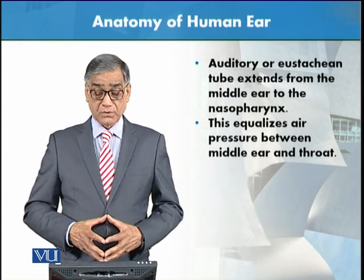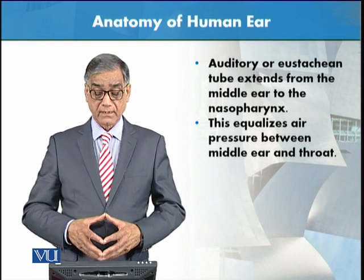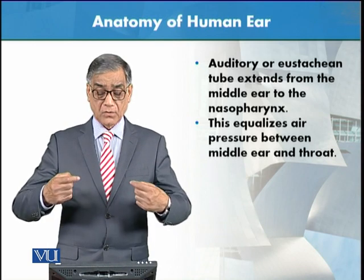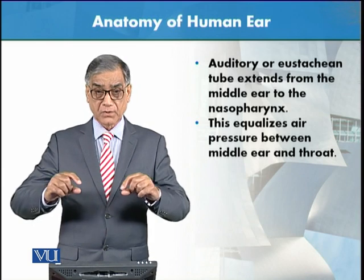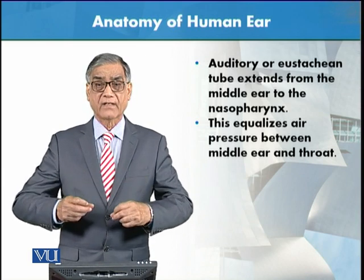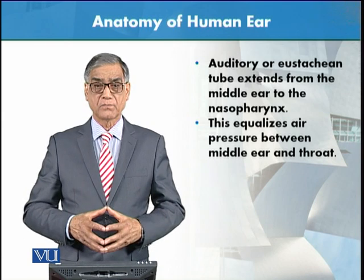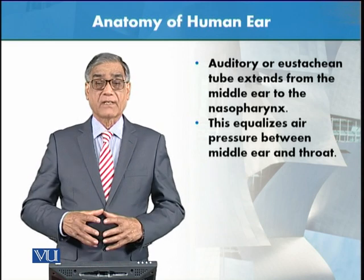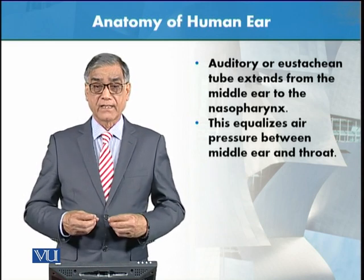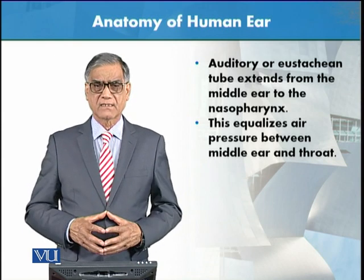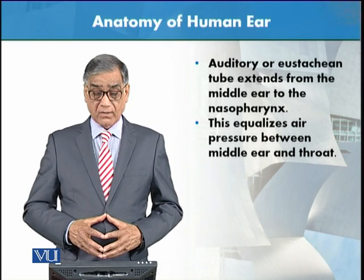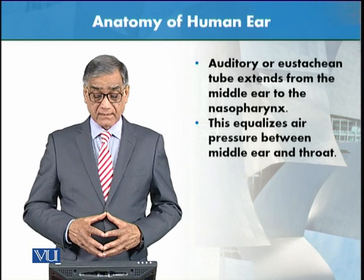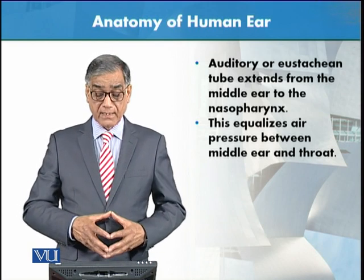The auditory or Eustachian tube extends from the middle ear to the nasopharynx, so these ears are connected with the nasopharynx. These tubes are also called auditory tubes, and they equalize air pressure between the middle ear and the throat.